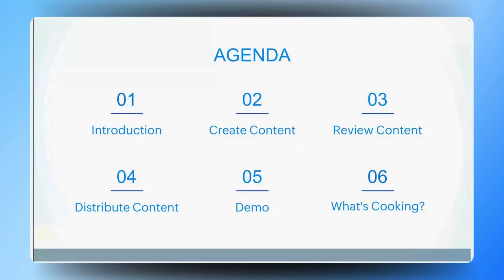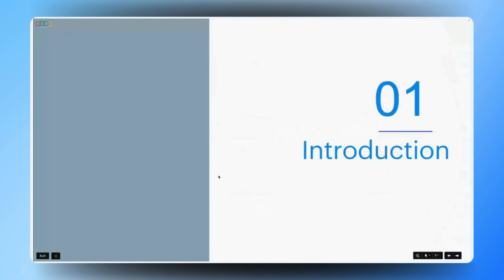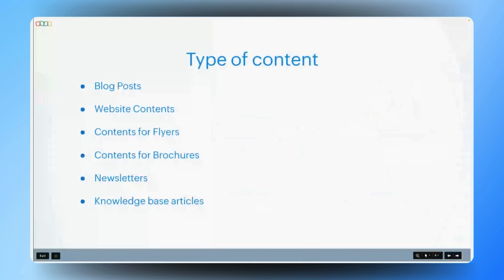Starting with the types of content that marketing teams can create using Zoho Writer. Gautam, can you walk us through how Zoho Writer supports marketing teams in crafting their content more efficiently? Writer makes it easy to draft and format blog posts with headings, images, and SEO tools to boost visibility. Teams can collaborate in real time to perfect the post before publishing. Similarly, they can create website content and publish or embed the documents directly from Zoho Writer.